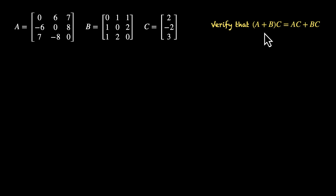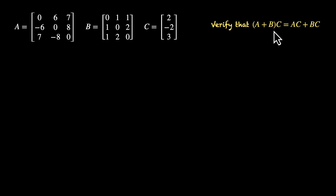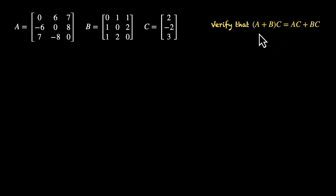We need to verify the distributive property: (A + B) times C equals AC plus BC. We know this works for scalar multiplication — if A and B are scalars, real numbers, we can distribute C over A and B to get AC plus BC. In this video, we'll see this also works for matrix multiplication; even if all three are matrices, this property still holds.